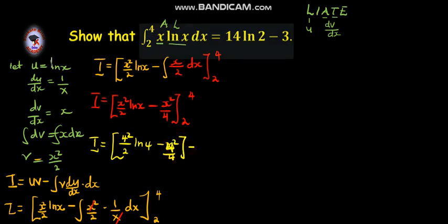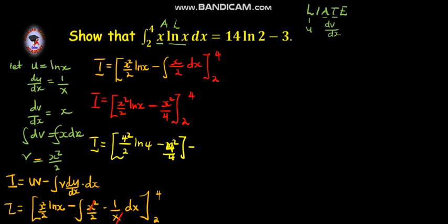Now, we're substituting for x equals 2. That will be equal to 2 squared over 2, ln 2, minus 2 squared over 4.